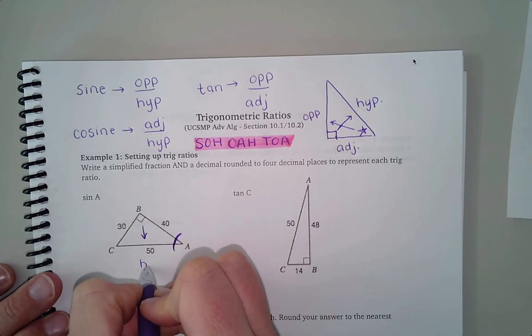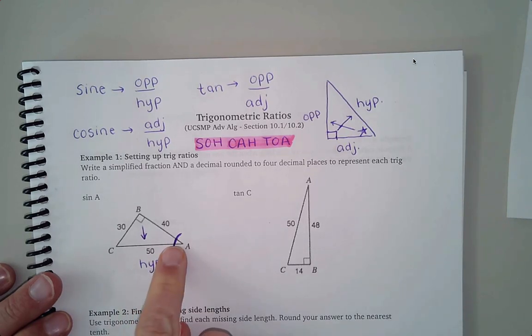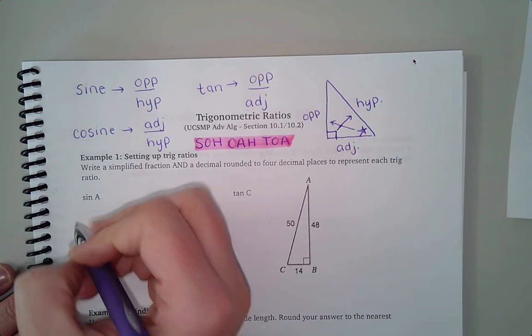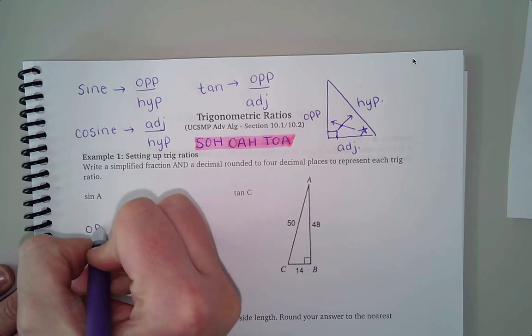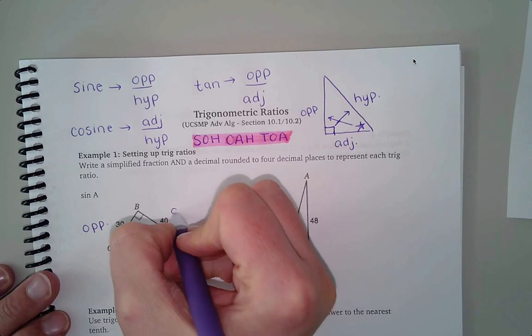That one doesn't actually matter that we were working with angle a. And then from angle a, the 30 is across so that would be opposite and the 40 is right next to it so that would be adjacent.